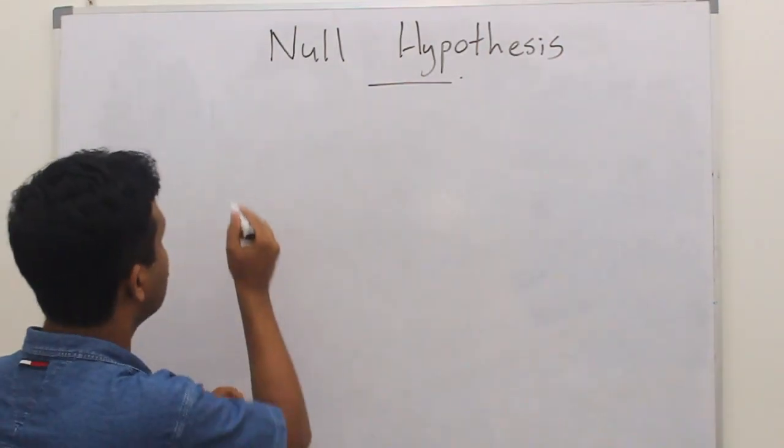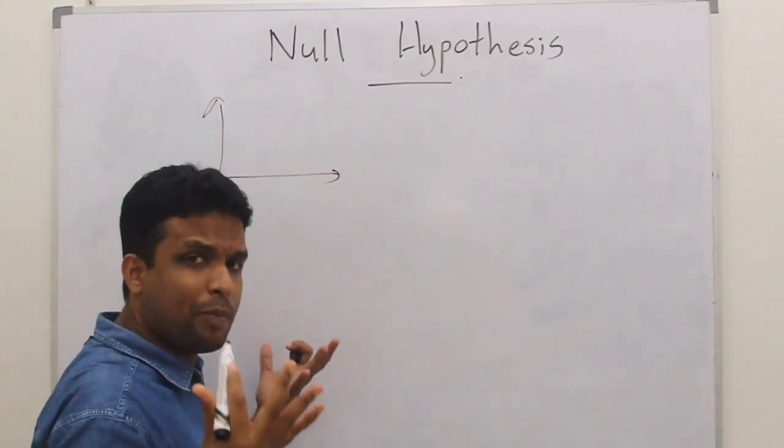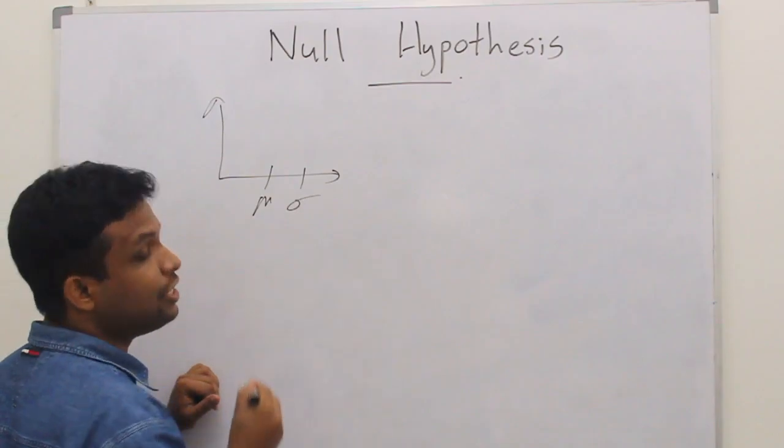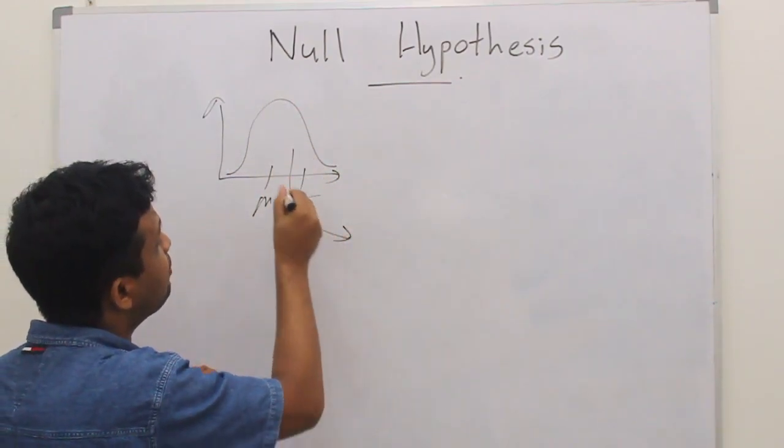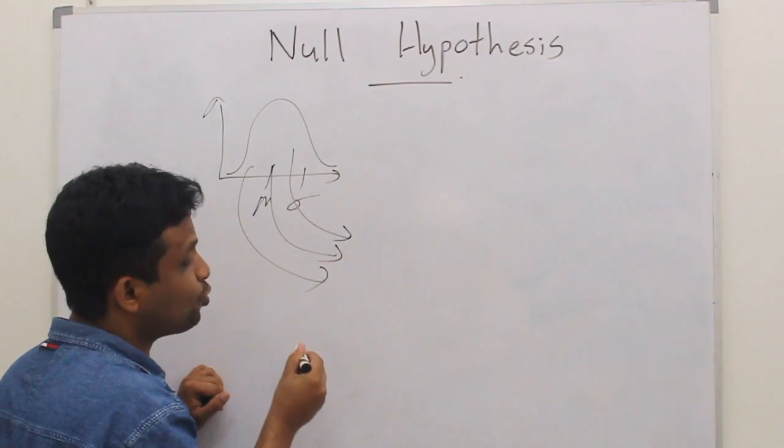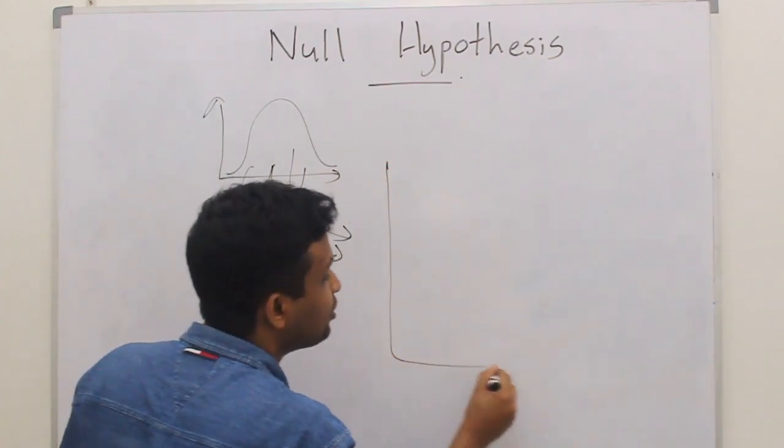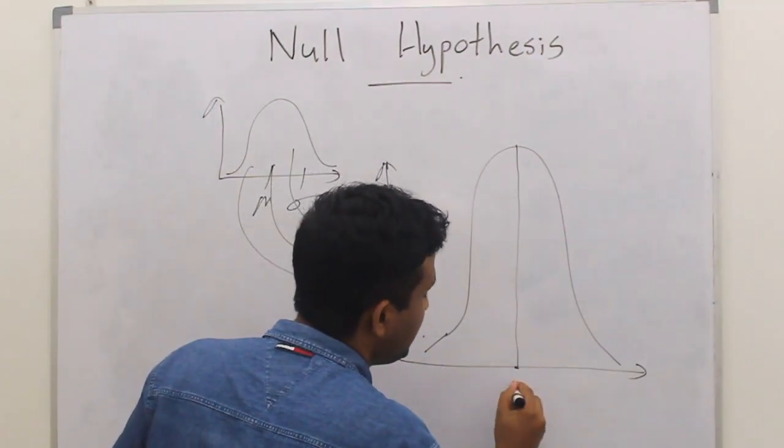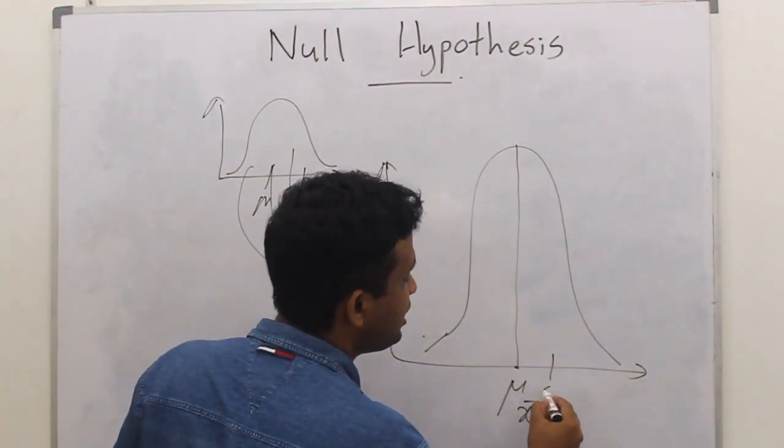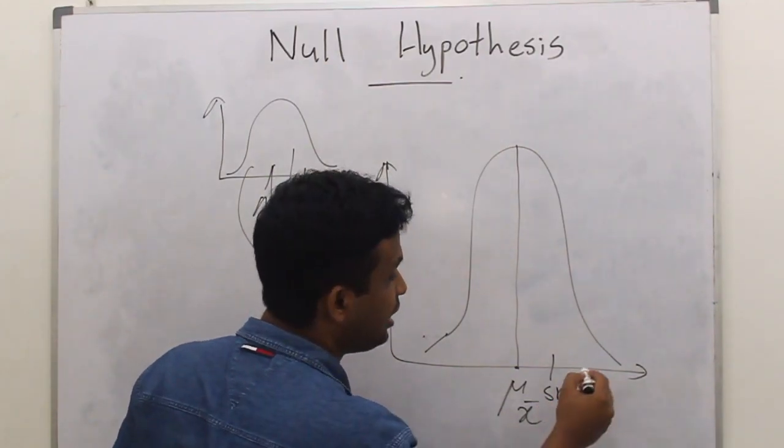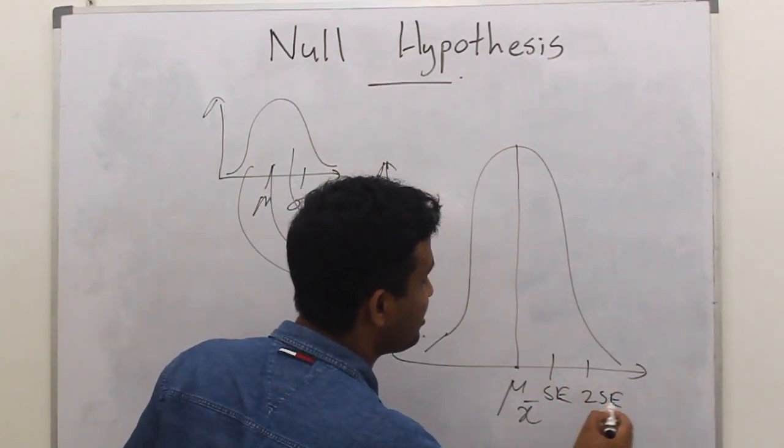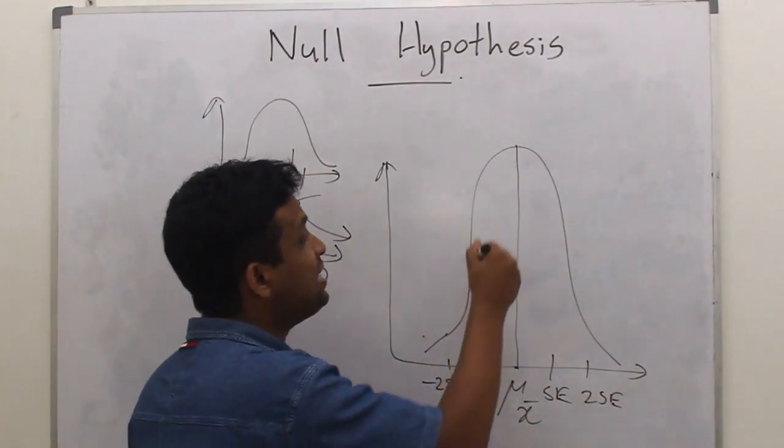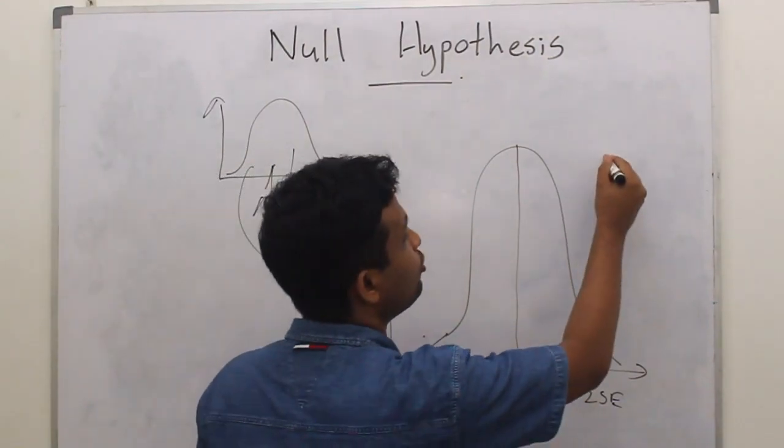In sampling distribution, we have the normal population distribution where mean is mu, standard deviation is sigma. We draw multiple samples from this and we draw something called sampling distribution where the mean is mu x bar, standard deviation is the standard error. So we have two standard errors here and we have minus two standard errors here. We have many sample means within this sampling distribution.